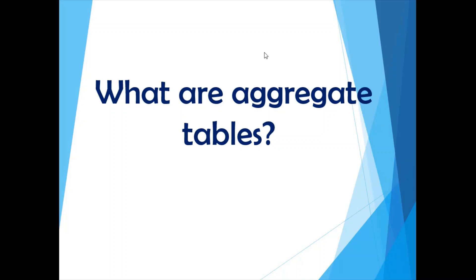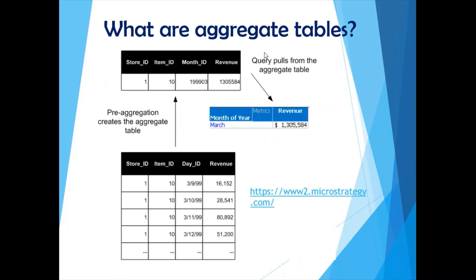The first question is: what are aggregate tables? So far we have seen facts and dimension tables. Let's say we have a fact table with daily transactional data and we want to create a report showing monthly sales — the monthly sales in January, February, and so on. One approach would be to create this query in the report editor itself, summing up all the sales for that particular month and fetching the output in the report.